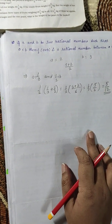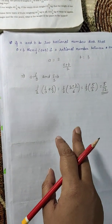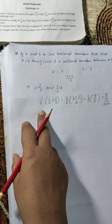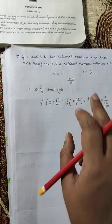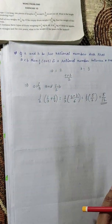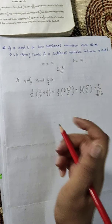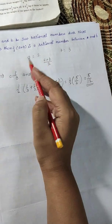So 5/12 is the rational number between 1/3 and 1/2.